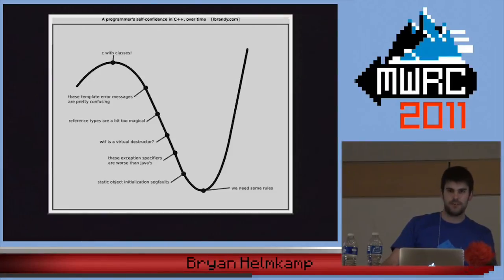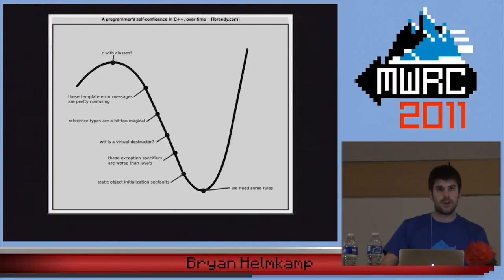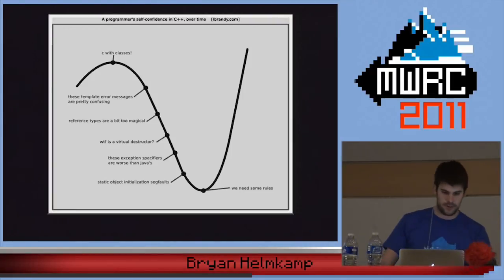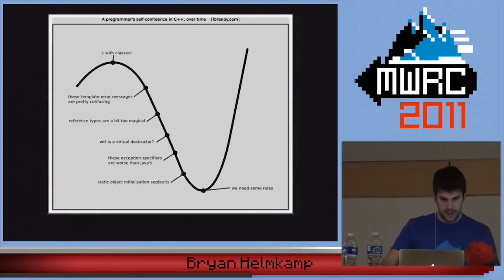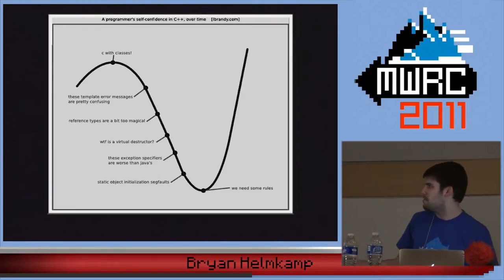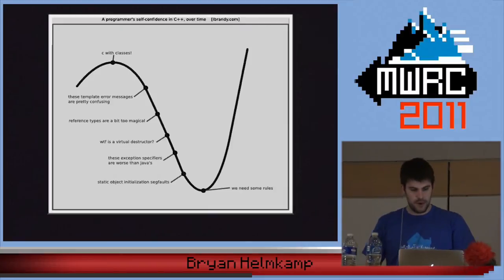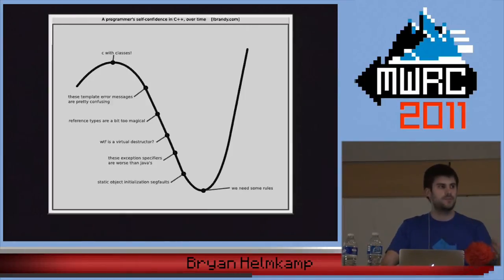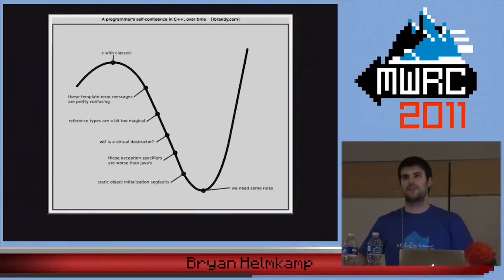Then a funny thing starts to happen. The programmer starts running into issues: template error messages are pretty confusing, reference types might be too magical, WTF is a virtual destructor, exception specifiers are worse than Java's, static object initialization segfaults. The programmer hits rock bottom in the trough in the middle of the graph, and says 'We need some rules.' Through thinking about rules to apply to their use of C++, they're able to regain confidence and use it without running into so many of these problems.